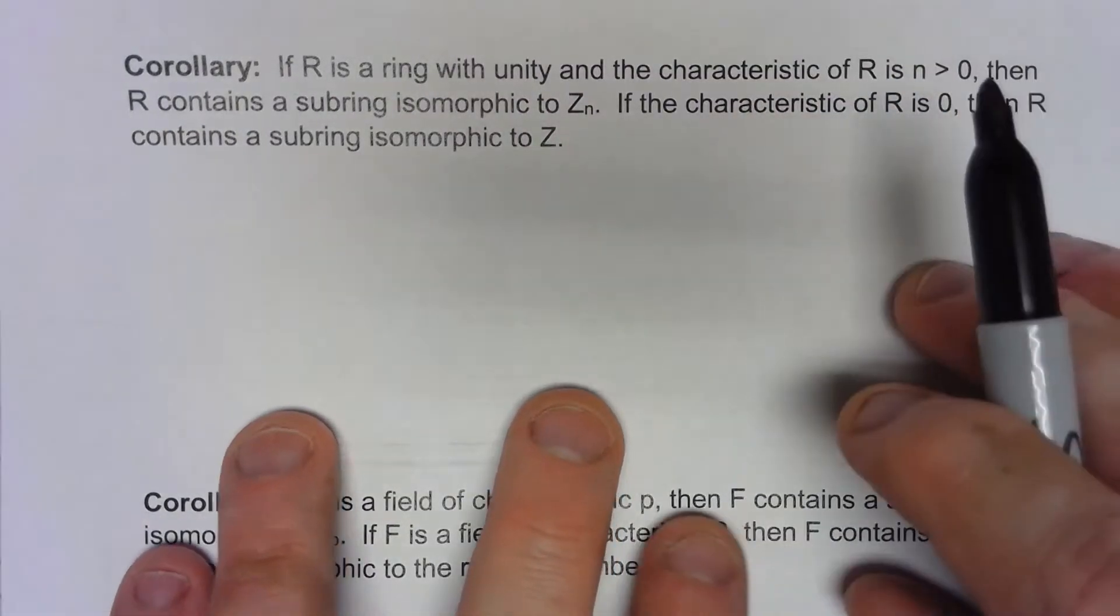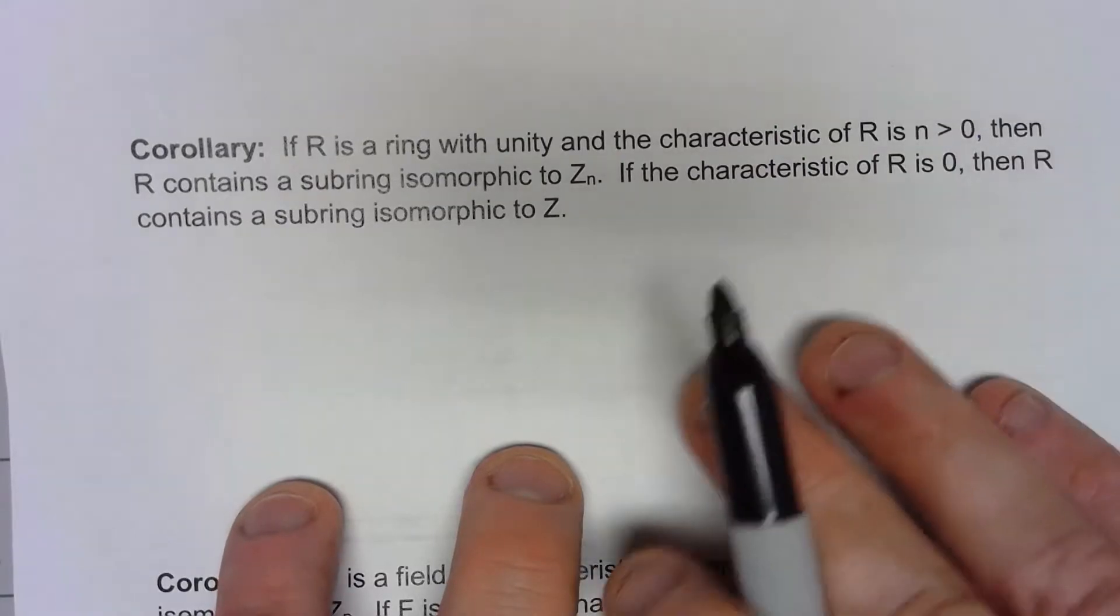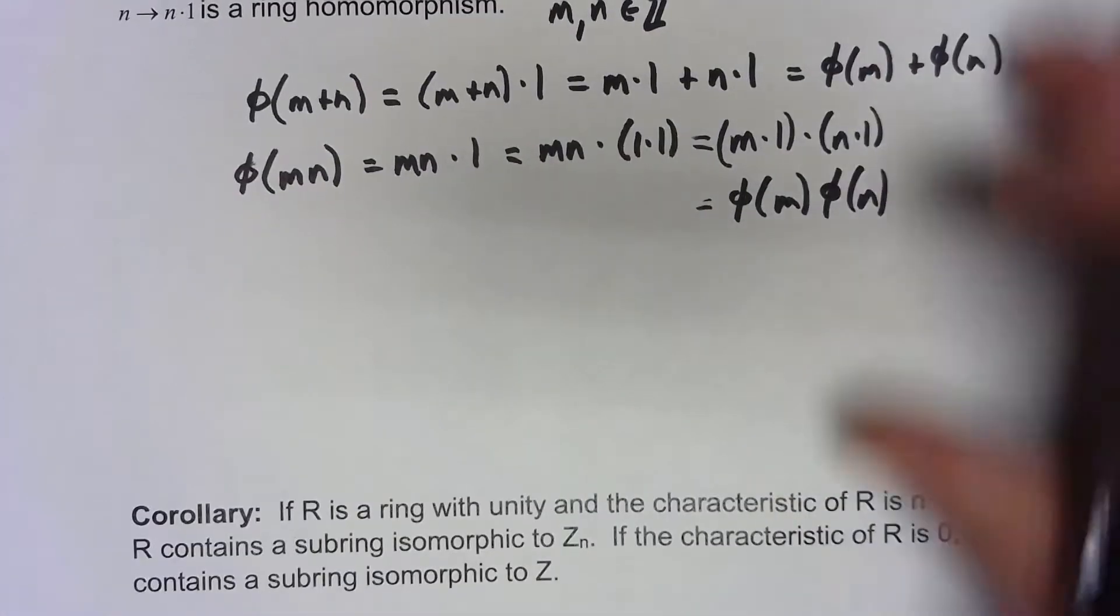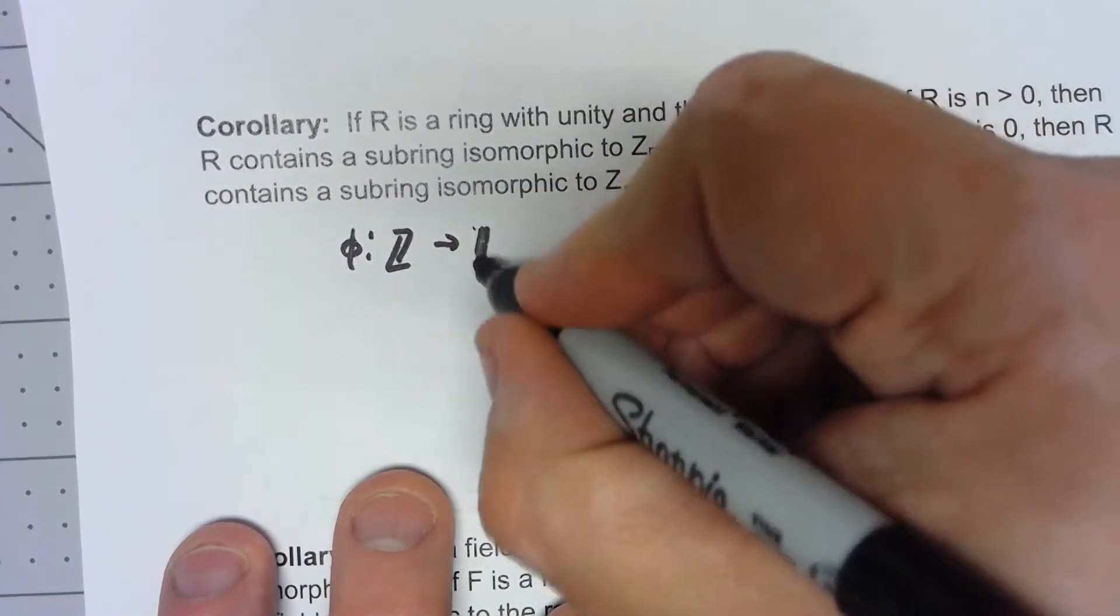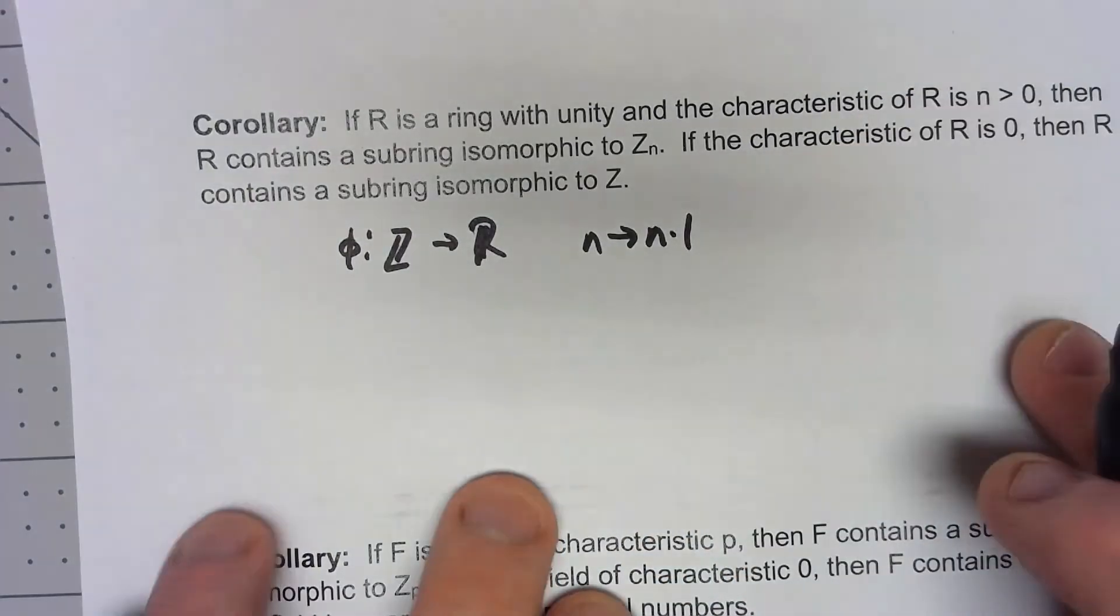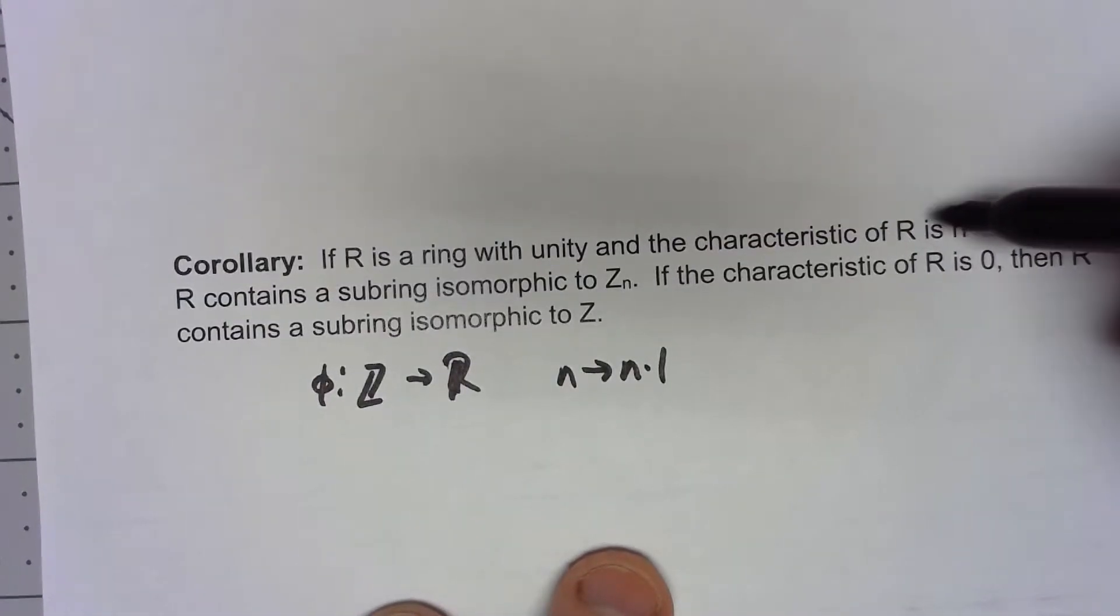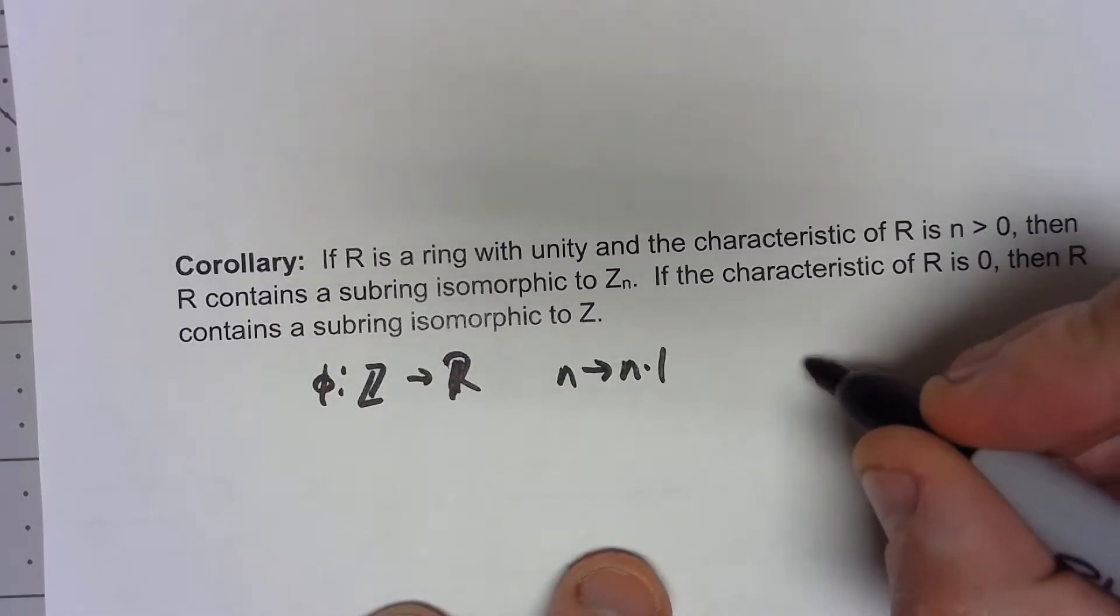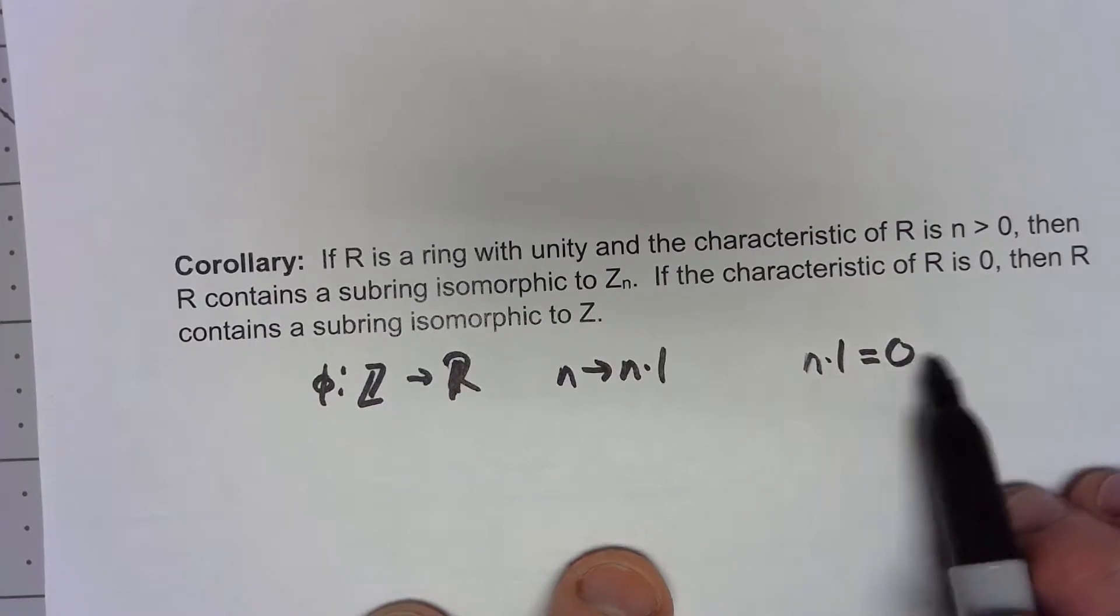Why is that? Well, let's think about that. We know from our theorem that φ mapping Z to this ring by n goes to n times 1 is a homomorphism. Now the characteristic of R is n, so we know specifically that n times 1 has to be 0, but also that nothing less than n times 1 can equal 0. Because that's basically what the characteristic of the ring means.